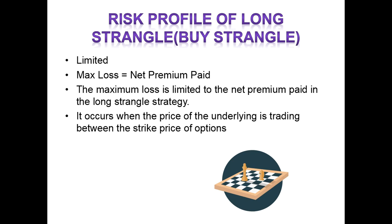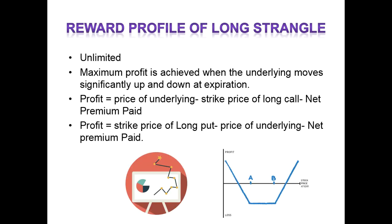Here is the risk profile for the long straddle. The maximum loss is limited to the net premium paid, and it occurs when the price of the underlying is trading between the strike prices of the options. The reward profile can be unlimited — maximum profit is achieved when the underlying moves significantly up or down at expiration. Profit is calculated as: price of the underlying minus the strike price of the long call minus the net premium paid, or as: strike price of the long put minus the price of the underlying minus the net premium paid.